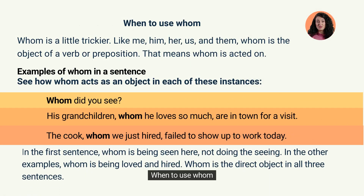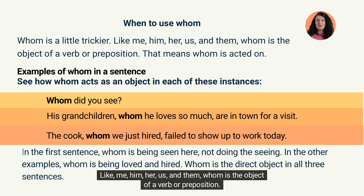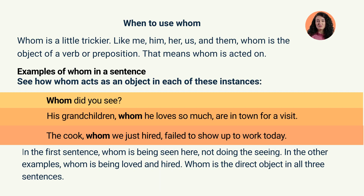When to use whom. Whom is a little trickier. Like me, him, her, us, and them, whom is the object of a verb or preposition. That means whom is acted on.